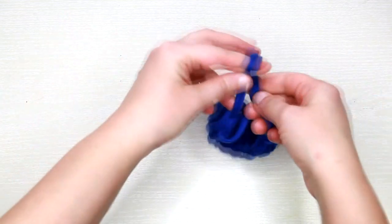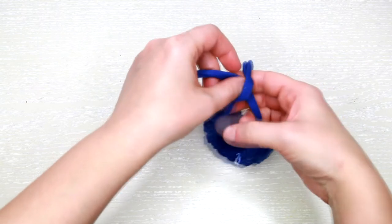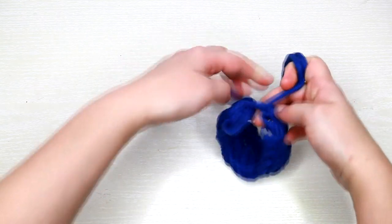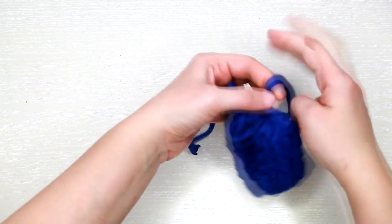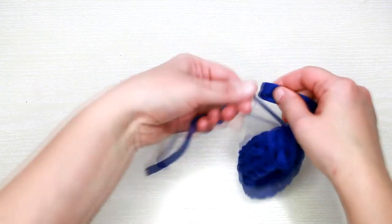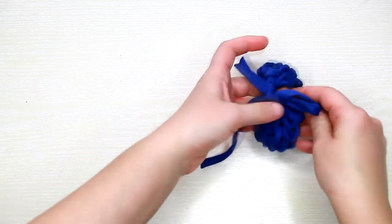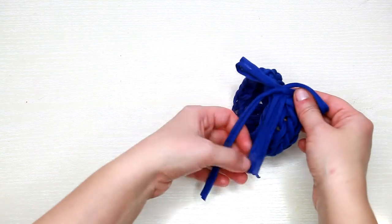If you're making a bracelet, you just need to tie a knot. Trim the ends and that's it.